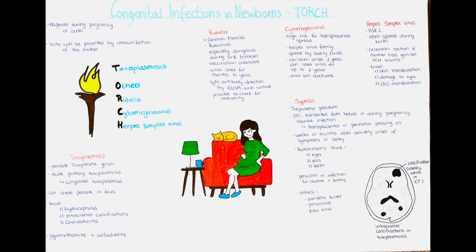A congenital infection in a newborn is an infectious disease which the fetus acquires within the uterus or while giving birth. It can either happen in the uterus transplacentally, meaning that the disease is spread via the placenta, or during the birth process — during the delivery — which we call peripartum.